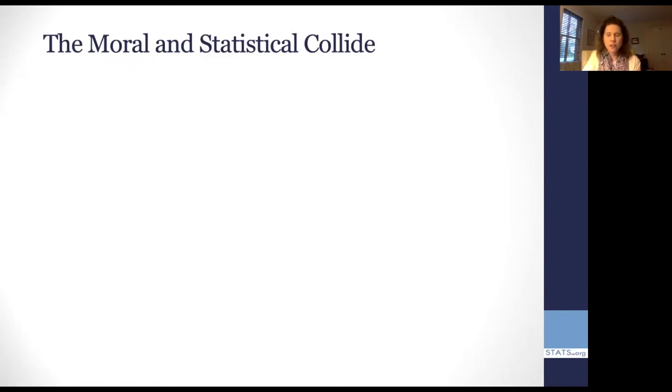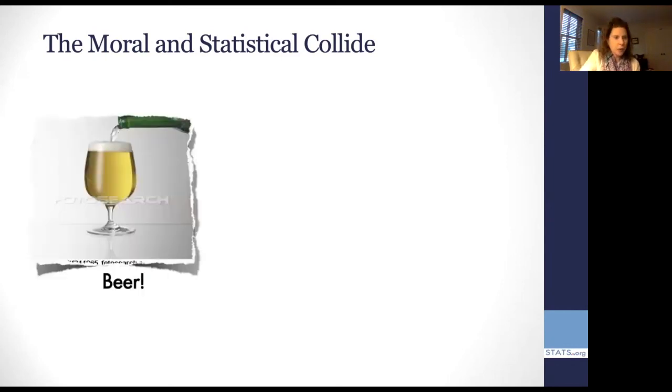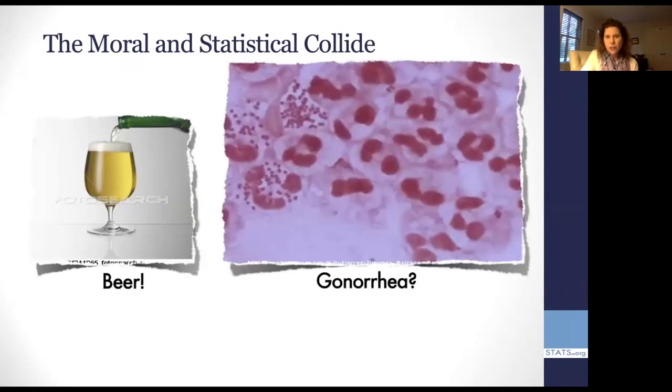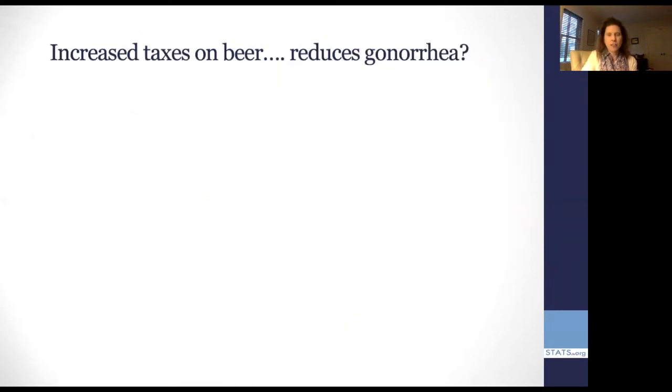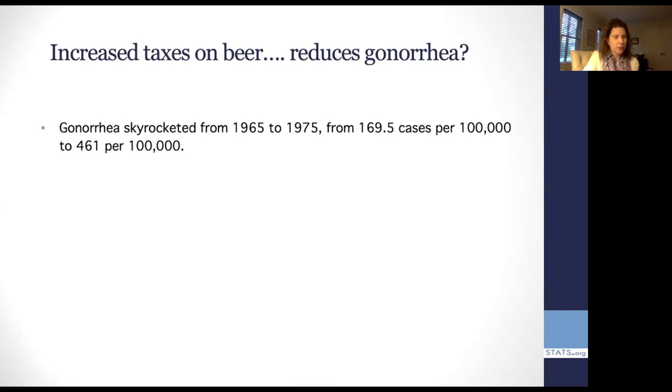Okay, so I think of this as a kind of moral and statistical collision, because it's easy to think what's the difference between a causal connection and a correlation when you have nothing invested in what the outcome is. But once you do, then you have a moral and statistical collision. So I'll give you an example of the kind of thing that happens. We see that beer, the sale of beer specifically, seems to be related to gonorrhea. And in fact, you might may or may not believe the causal statement that taxes on beer reduces gonorrhea. Well, how do we get to something like this?